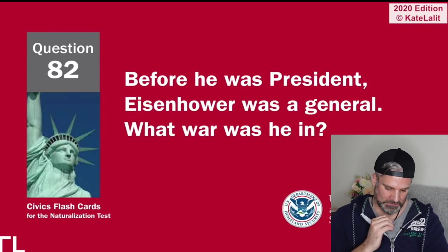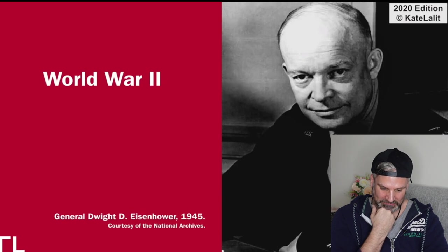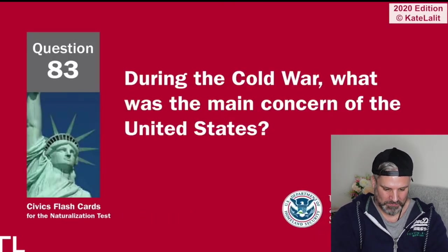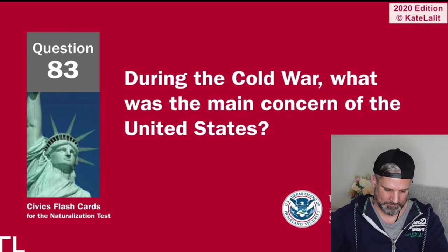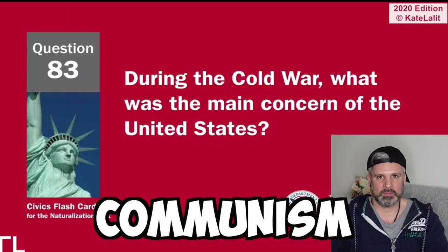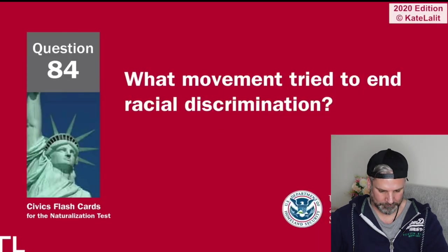Who was president during the Great Depression and World War II? Roosevelt — Franklin Roosevelt. Who did the United States fight in World War II? Japanese, Germans, and Italians — they kept switching sides didn't they? Germany and Italy. Before he was president, Eisenhower was a general — what war was he in? World War II. During the Cold War, what was the main concern of the United States? Communism.